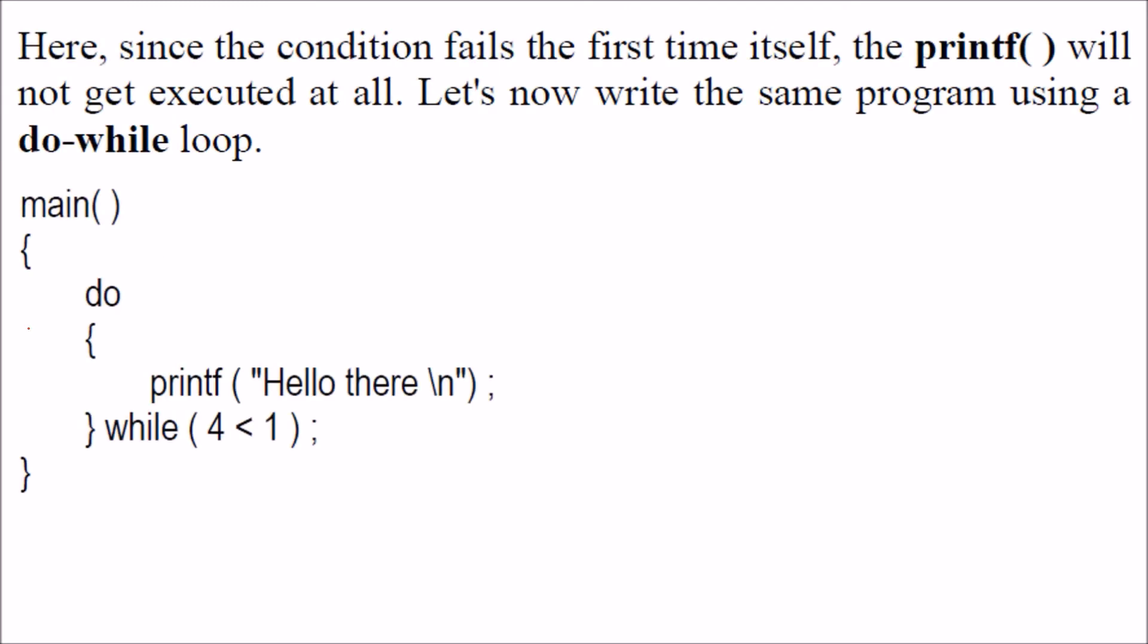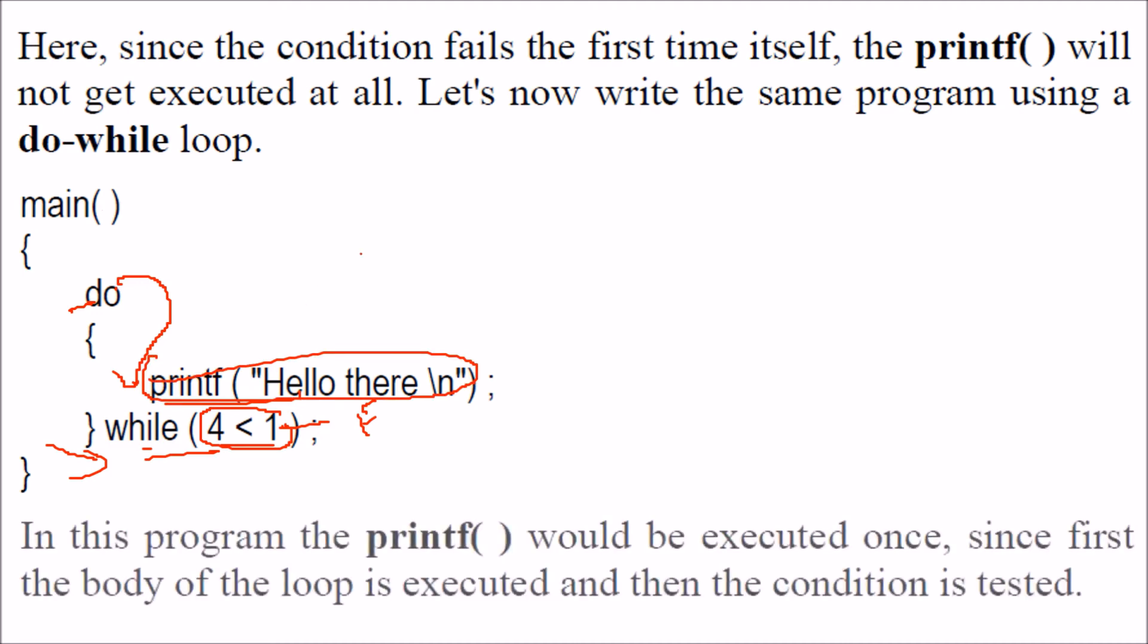But if we employ do while loop here, we say do while 4 less than 1. We know that this condition is false. But since we have employed do, this control will enter. This print will be printed. Hello there. But the condition is false, then it will come out. At least one time this print will be printed. Hello there will be printed.